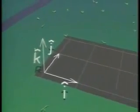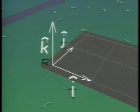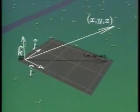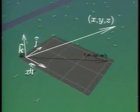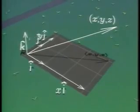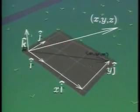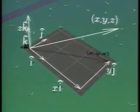In a three-dimensional space, a third unit vector, k, is used. k is perpendicular to the plane of i and j. A three-dimensional vector is written x i plus y j plus z k.